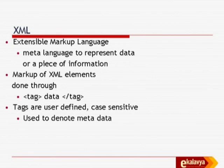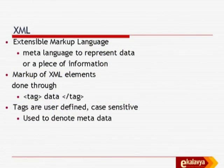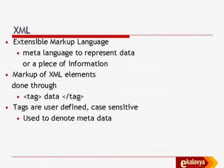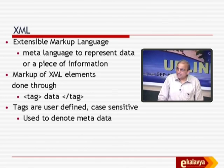XML is extensible markup language. The similarity between HTML and XML is only that both are called markup languages. But XML's extensibility is more important than just rendering. XML is actually a meta language to represent data or a piece of information - this is different from rendering. The most fundamental difference: the purpose of HTML is to indicate how a document will look when rendered on screen, while the purpose of XML is to define what the document contains. XML markup is done through tags - tag, data, slash tag - but the tags are user-defined.